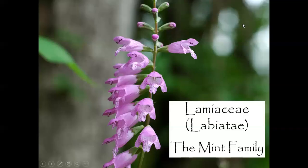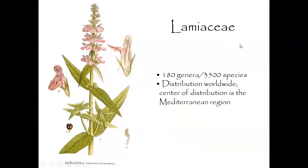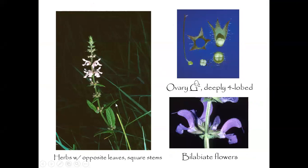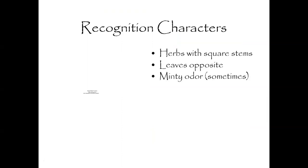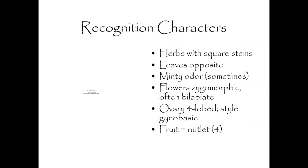The next family is Lamiaceae, also called the Mint family. This family has 180 genera and 3,500 species, with worldwide distribution centered in the Mediterranean. Specific characteristics include herbs with opposite leaves per stem, a deeply furrowed ovary, and bilabiate flowers. Recognition characters: herbs with square stems, opposite leaves, minty odor, zygomorphic and often bilabiate flowers, ovary with 4 lobes, gynobasic style, and fruit is a nutlet.